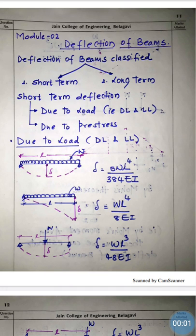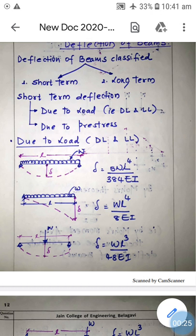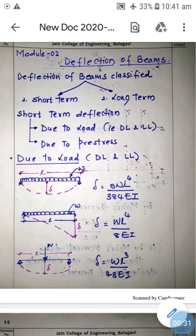Welcome back students for today's lecture — Lecture 2 on deflection of beams, which is part of Module 2 for the subject Design of Prestressed Concrete Structures. In the previous lecture we discussed what deflection of beams is, short-term deflection, long-term deflection, and different methods to calculate deflection. In this lecture we will discuss types of deflections and the different equations to calculate deflections in prestressed concrete beams.